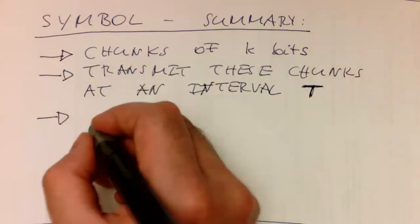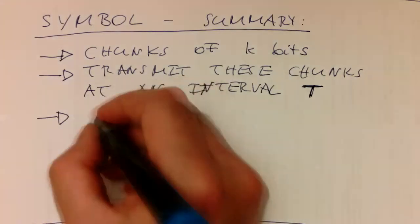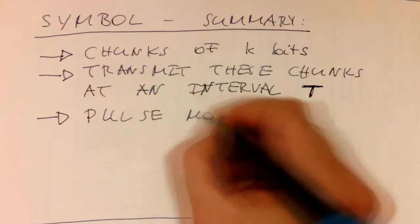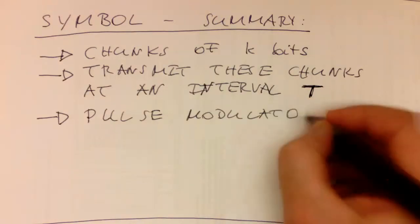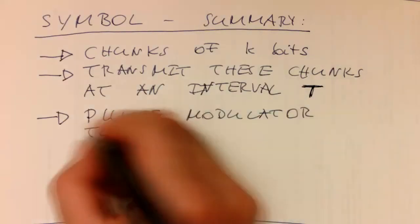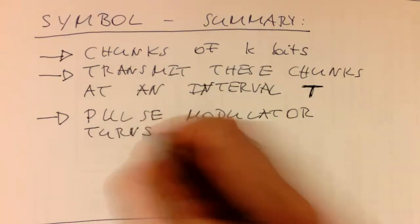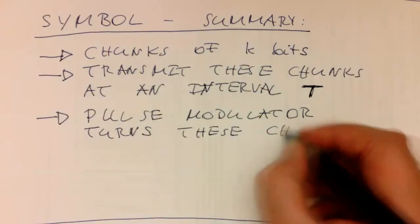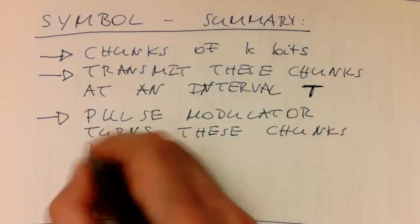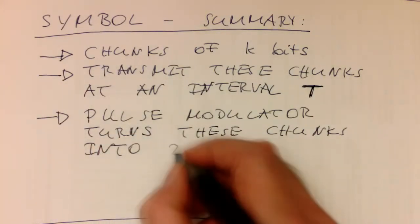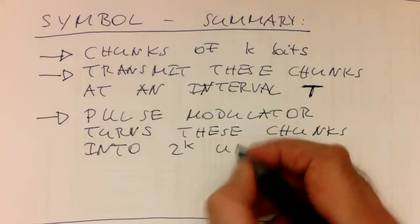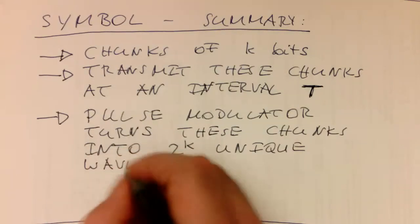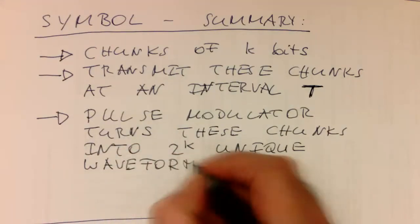And in order to do this, the so-called pulse modulator turns these chunks into 2 to the 2k unique waveforms.